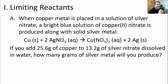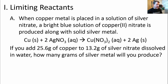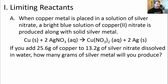We have copper metal placed in a clear solution of silver nitrate. When you do that, the solution starts turning blue as copper(II) nitrate forms, and a silvery metal pops out, which is silver. So when we add copper to silver nitrate, we get copper nitrate — the blue one — plus silver metal. The question is: if you add 25.6 grams of copper to 13.2 grams of silver nitrate dissolved in water, how many grams of silver metal will you produce?